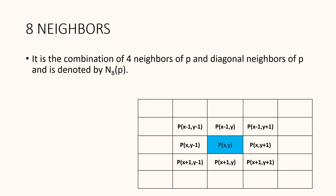Eight neighbours: the 8-neighbours is a combination of the 4-neighbours of p and the diagonal neighbours of p. The 8-neighbours is denoted as N8(p), and can also be expressed as N8(p) = N4(p) ∪ ND(p).